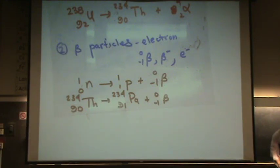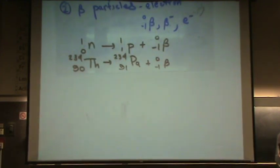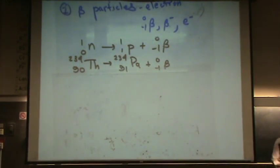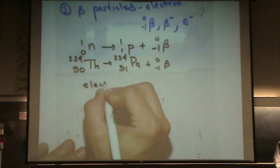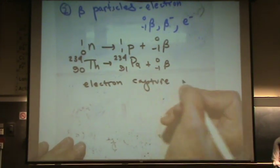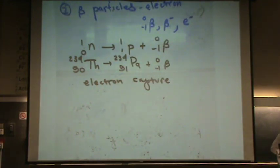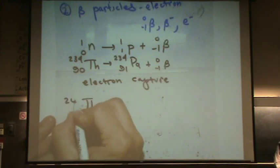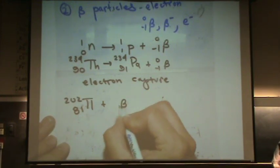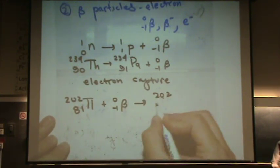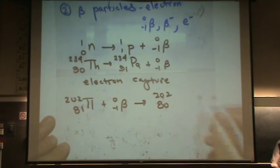We can have a different kind of a beta particle in something called electron capture. So this is still in the same category. Electron capture. That basically means a beta particle is in the reactants. So, for example, I think this thallium, 202 and 81, plus a beta particle goes to 202 and 80, which is mercury.